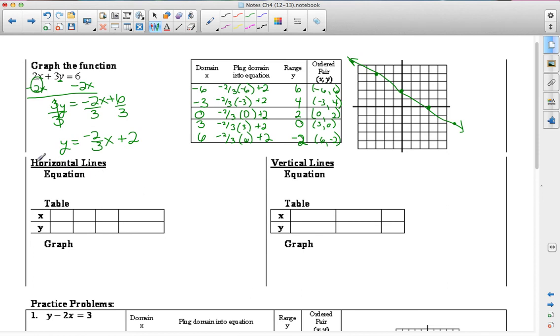So let's go ahead and finish up 4.2 by talking about horizontal lines and vertical lines. When we talk about a horizontal line, remember that in terms of a picture, horizontal lines are parallel to the x-axis.